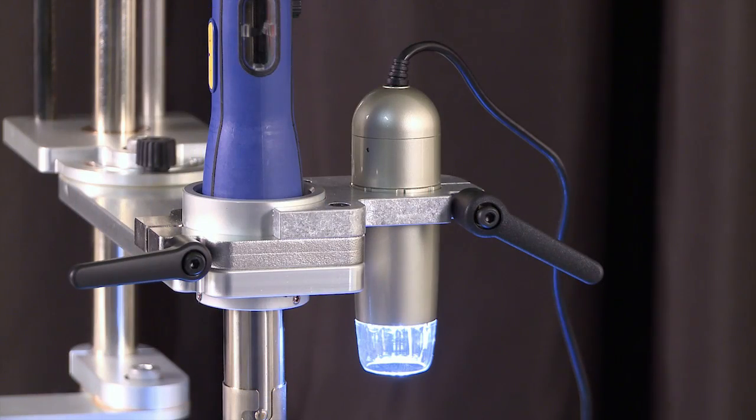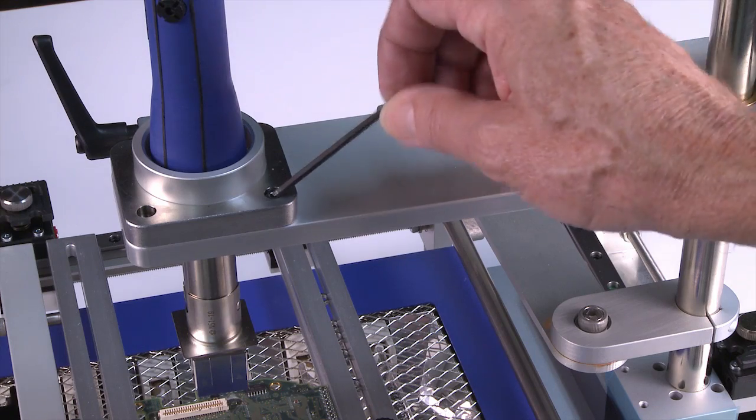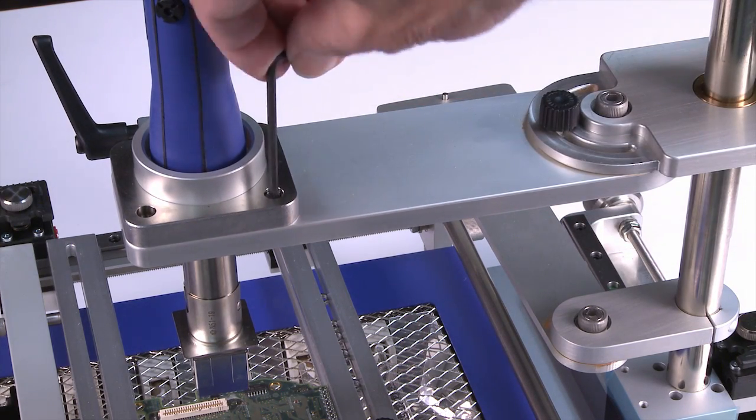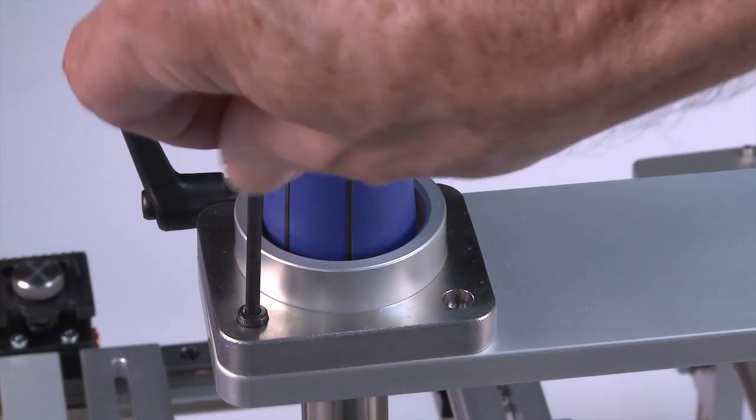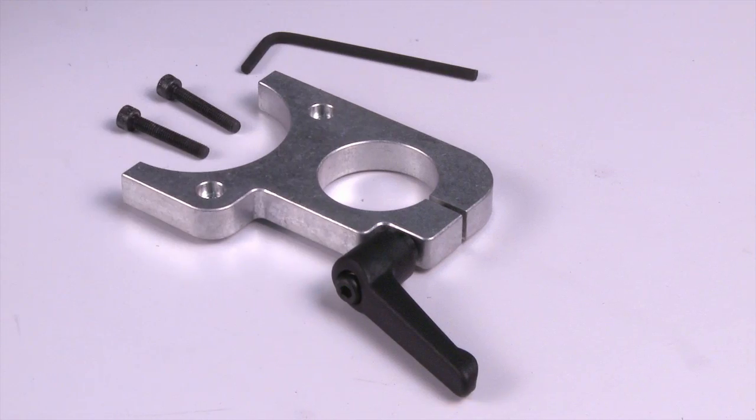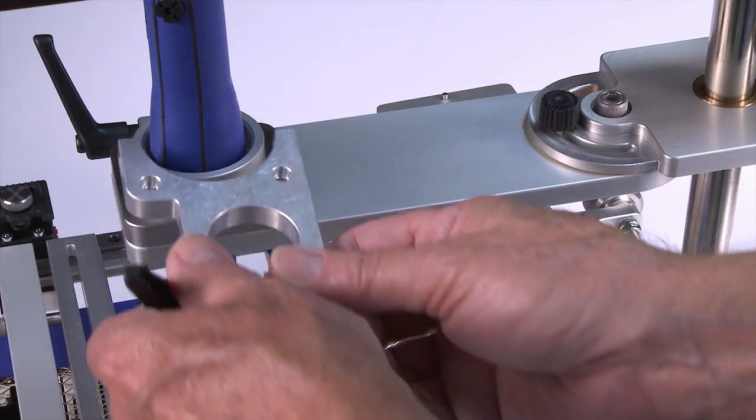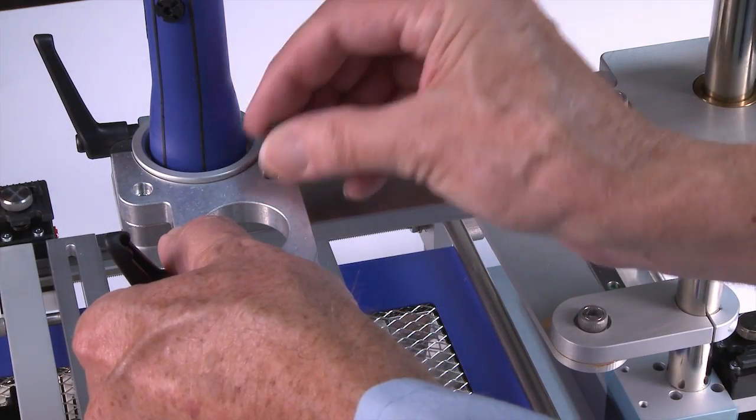A basic camera system attaches to the Hakko FR811 handpiece fixture in a set position. Use a 3mm hex wrench to remove the two screws on the handpiece fixture, place the camera mounting bracket on the fixture, and screw into place.